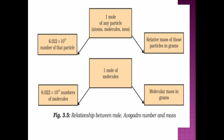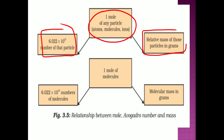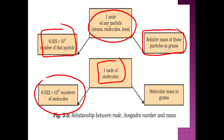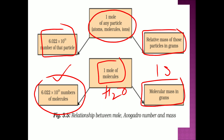So the mole concept relates to both mass and number. One mole of any particle contains Avogadro's number of particles, and in terms of mass it is the relative mass of those particles — the atomic mass expressed in grams. One mole of any molecule means 6.022 × 10²³ molecules, and in terms of mass it is the gram molecular mass. For example, 1 mole of water means Avogadro's number of water molecules and has a mass of 18 grams.